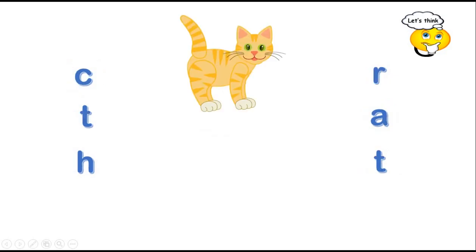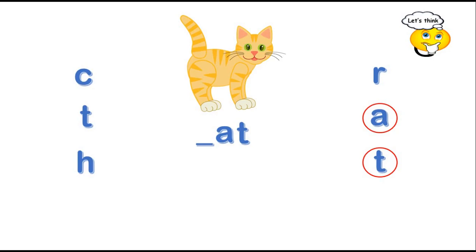Look at this one. The first letter is missing. A is here. T, T. Okay, which one is the missing letter? Let's think. C is the missing letter. What's the word? Cat.